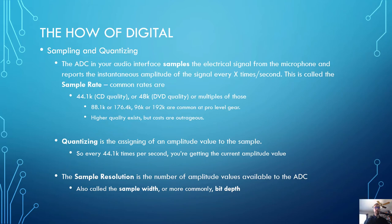Common rates are 44.1 thousand samples per second — that is CD quality and effectively the baseline we're working from for pretty much everything. 48K is the standard for DVD quality and video quality generally. We also have multiples of these like 88.2K, 176.4K, 96K, or 192K. These are very common at pro level gear. There are also higher quality sample rates used with very expensive hardware, used entirely for archival purposes at organizations like the Library of Congress or National Public Radio.